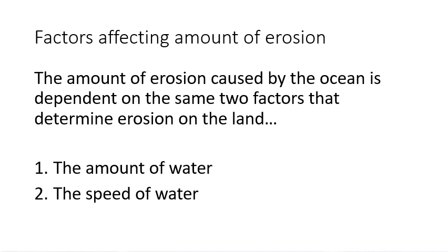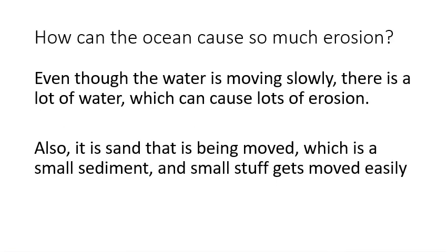These two factors still hold true: it's the amount of water and the speed of water that determines how much erosion happens. But how can the ocean cause so much erosion? Water in the ocean basically isn't moving like a fast-moving river. The trick is that it's a lot of water, and we know that the amount of water makes a difference — more water causes more erosion. Also, sand is pretty small and gets moved pretty easily, though an ocean can't move a boulder.